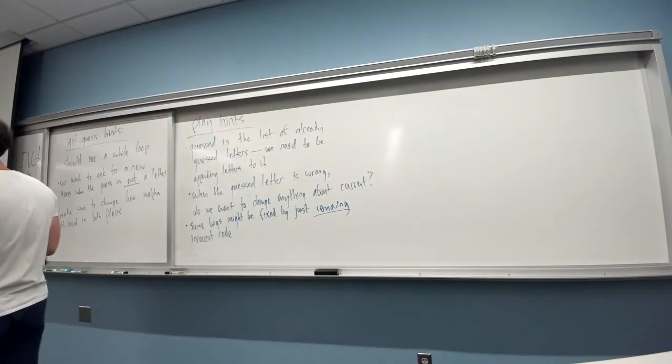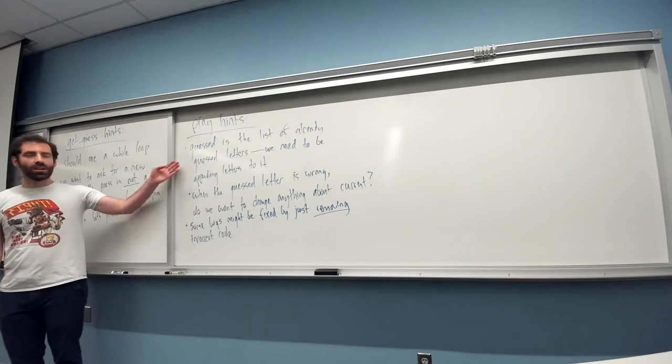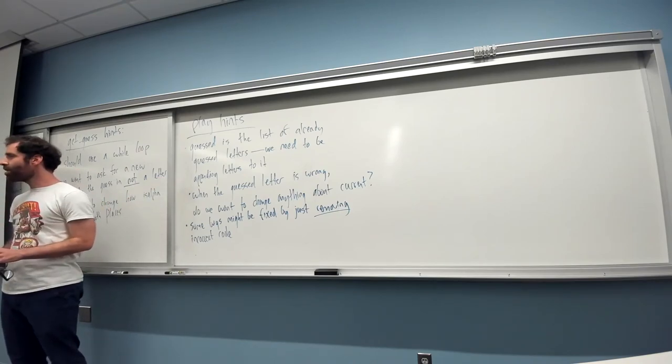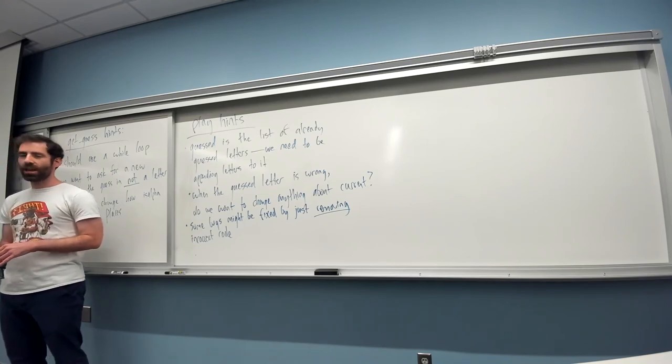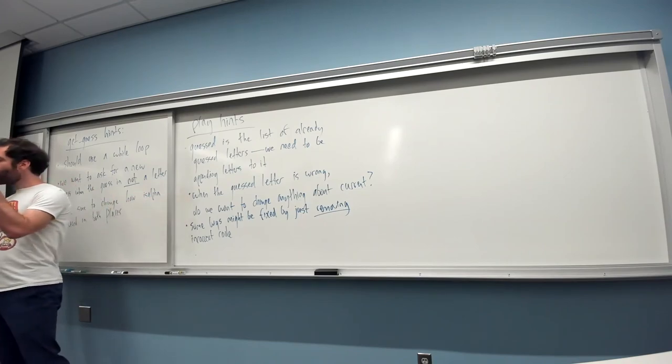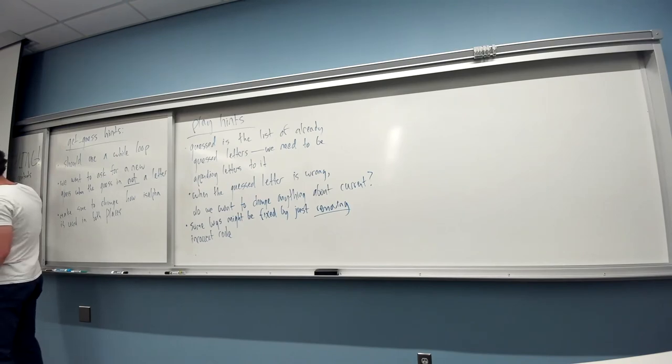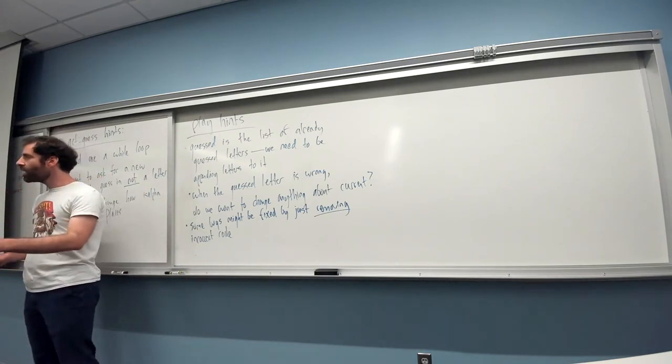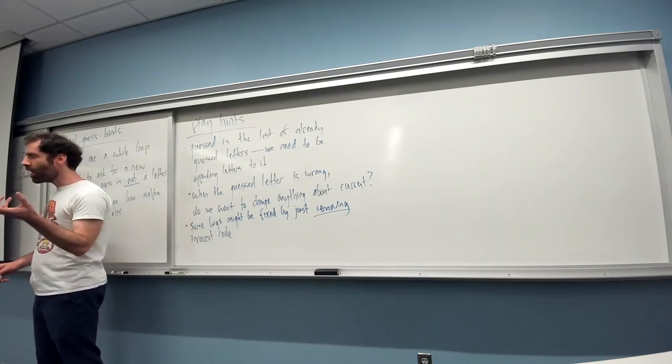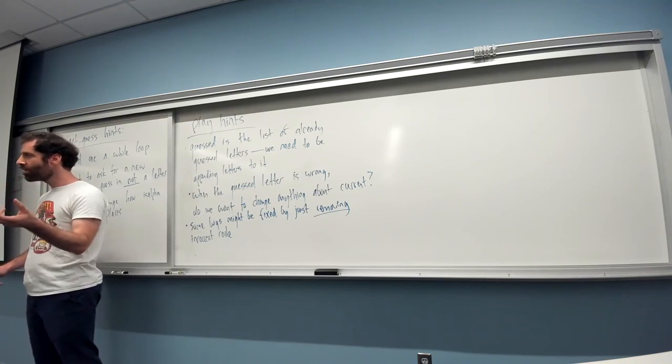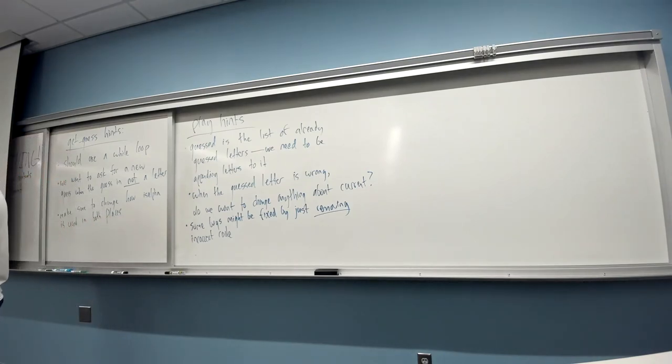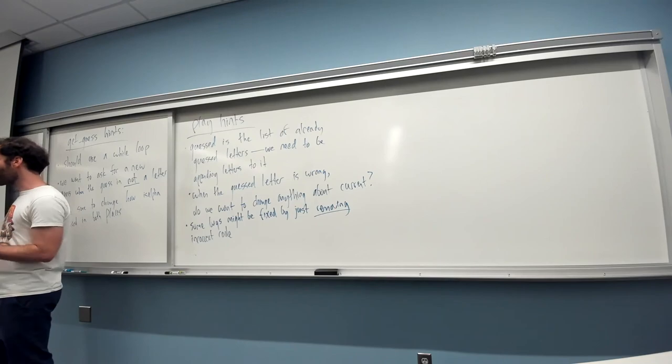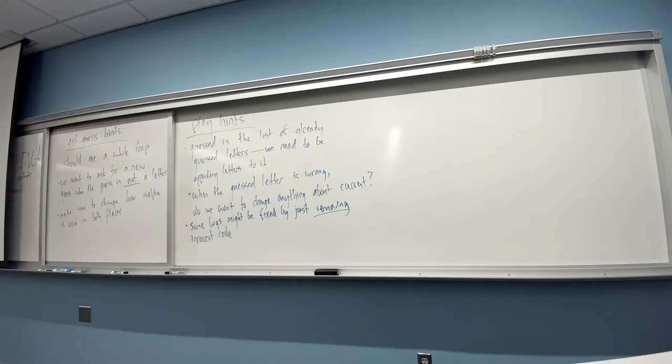I have put a few hints about the play function up on the board. Guessed is a variable that has our list of already guessed letters. You probably want to be adding letters to it with the append method in order for letters to actually show up. Second, when a guessed letter is wrong, we have this loop here that says guess equals equals word bracket i. And so, when a guessed letter is wrong, when it doesn't match any letters in the word, you might think about, do we want to change the current progress at all? And something to consider is that some bugs in this lab might be fixed by just removing code. They're not all fixed necessarily by changing code. You might just need to remove code that's incorrect.